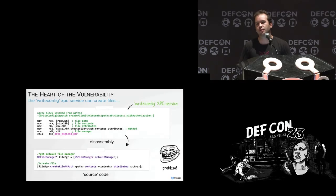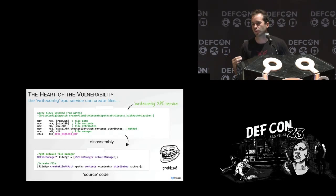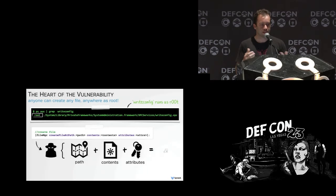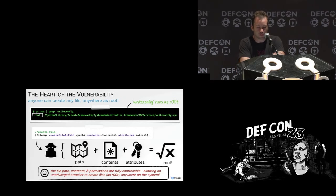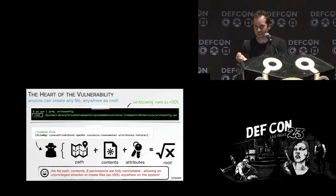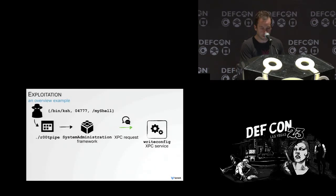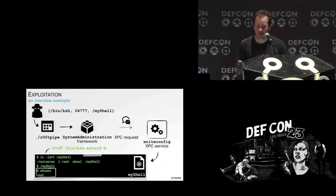There's a private XPC service called writeconfig. It exposes a remote method named writeconfig dispatch create files with contents. The problem is any user — even guests — can connect to this writeconfig XPC service, which runs as root, and then create files. The user can specify the path, contents, and attributes. So for example we can create a copy of a shell and set the SUID bit. Since that shell is created as root, simply executing it will give us root privilege. Really doesn't get much easier than this.